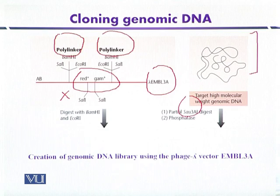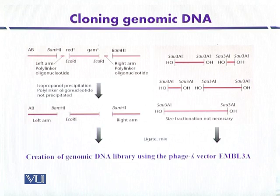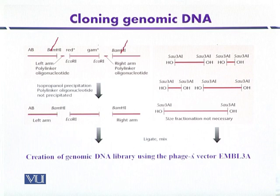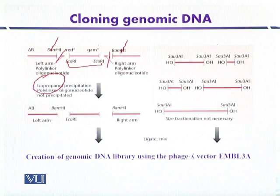Plaque formation indicates the insertion of foreign DNA at this location within the non-essential gene. Lambda EMBL3A is first digested with BamHI and EcoRI, producing discrete fragments with BamHI cohesive ends. The non-essential region containing red+ and gam+ is removed by EcoRI digestion, and the polylinker sites at the left and right arms are discarded after isopropanol precipitation.